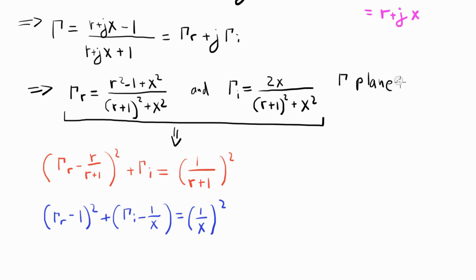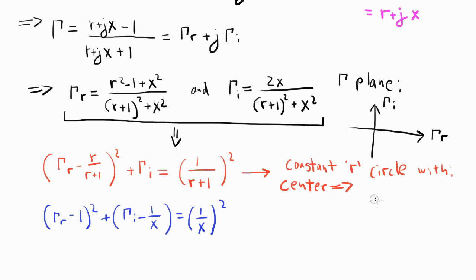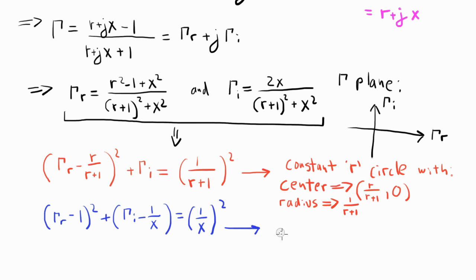These circles exist in the gamma plane, whose x-axis is the real part of gamma (gamma_r) and y-axis is the imaginary part (gamma_i). The first equation defines a constant-r circle, completely defined by the variable r. It has a center at (r/(r+1), 0) and a radius of 1/(r+1).